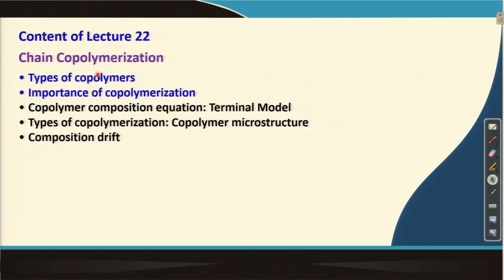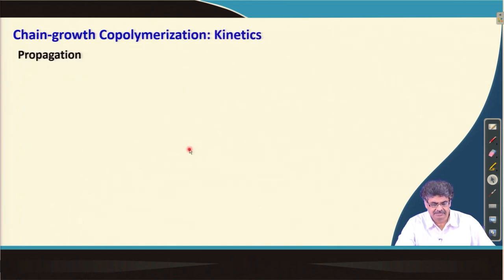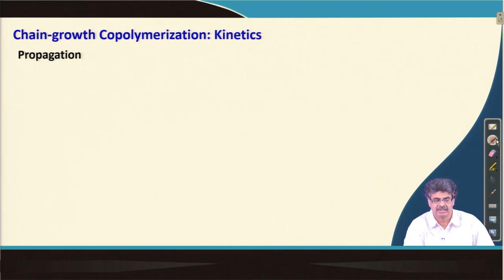In this lecture, these are the topics I plan to cover. The first two topics were covered in the last lecture, and I will cover the third in this lecture. Like normal chain polymerization, the rate of polymerization depends on the rate of propagation, because most of the monomers are consumed during the propagation step.